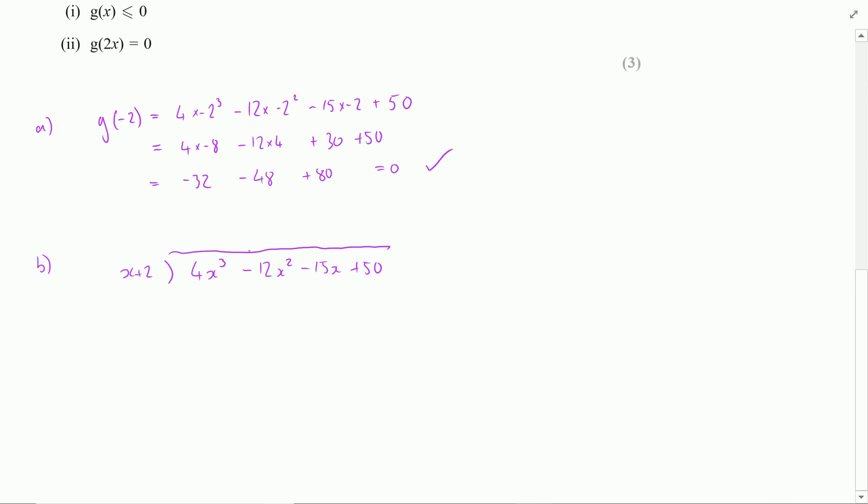So x is into 4x cubed goes 4x squared times, which would multiply through to give me 4x cubed and then 2 times that would give me plus 8x squared. Doing the subtraction, annihilation of the first terms and I have minus 20x squared remaining here.